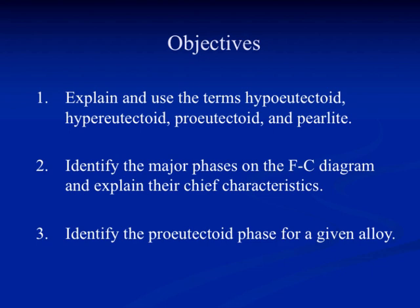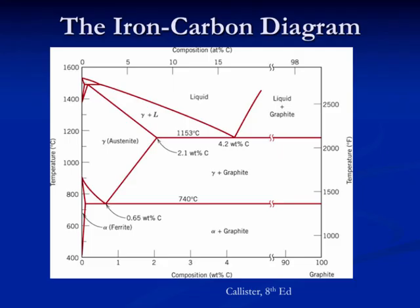You should be able to pull the major phases off the iron-carbon diagram. And if I give you an alloy, you should be able to identify the pro-eutectoid phase. It'll all make sense for you.